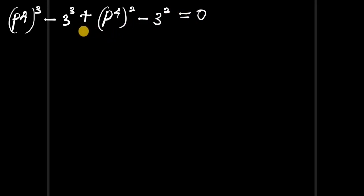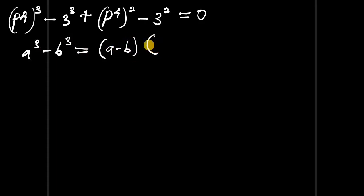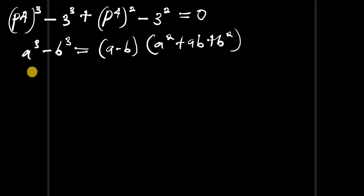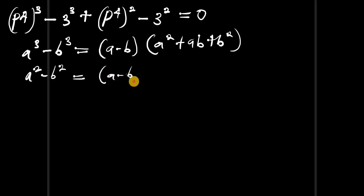The identity for a³ minus b³ equals (a minus b)(a² plus ab plus b²). And also the identity a² minus b² equals (a minus b)(a plus b). Now let's substitute these into the equation.